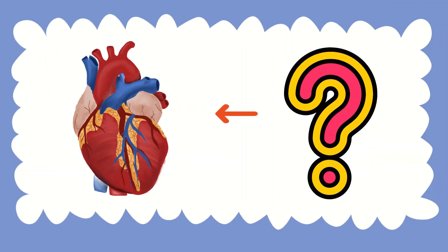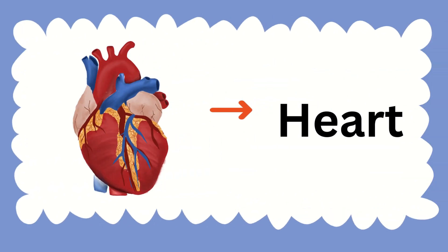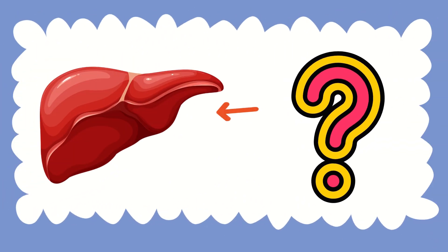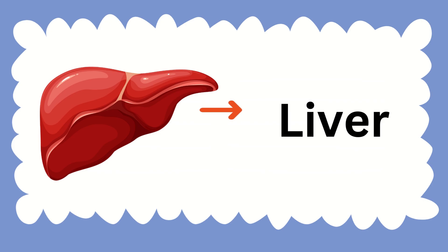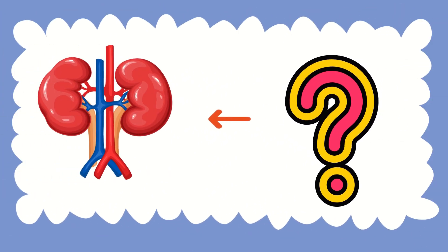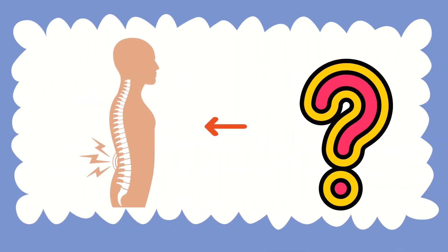Have you seen this organ? It's our heart. What about the next internal organ? Can you guess the name? It is called liver. Let's see the next organ — it is called kidney.